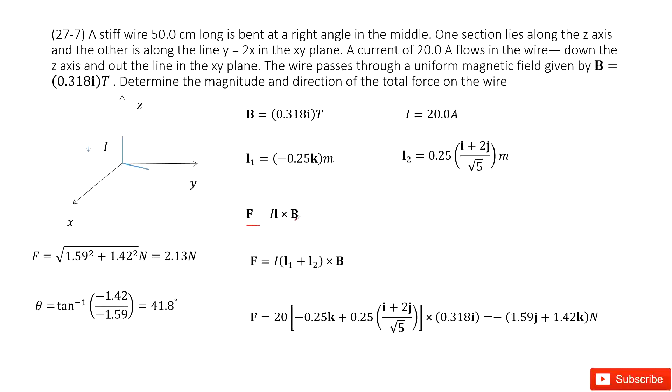So it looks like we need to find B and L, then do the calculation to get the final answer. We can write the magnetic field B in vector format, because it is already given. Then we look at the current.